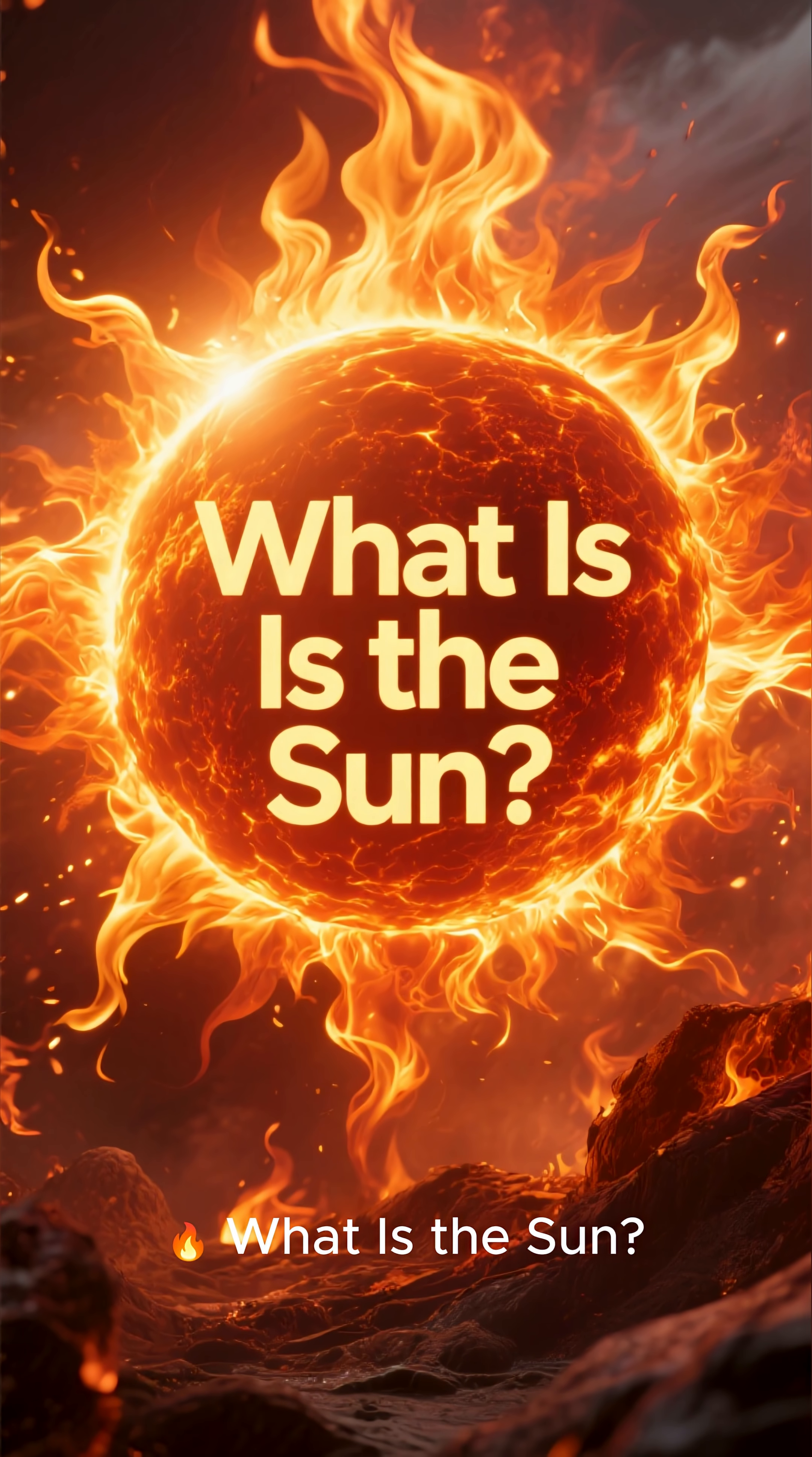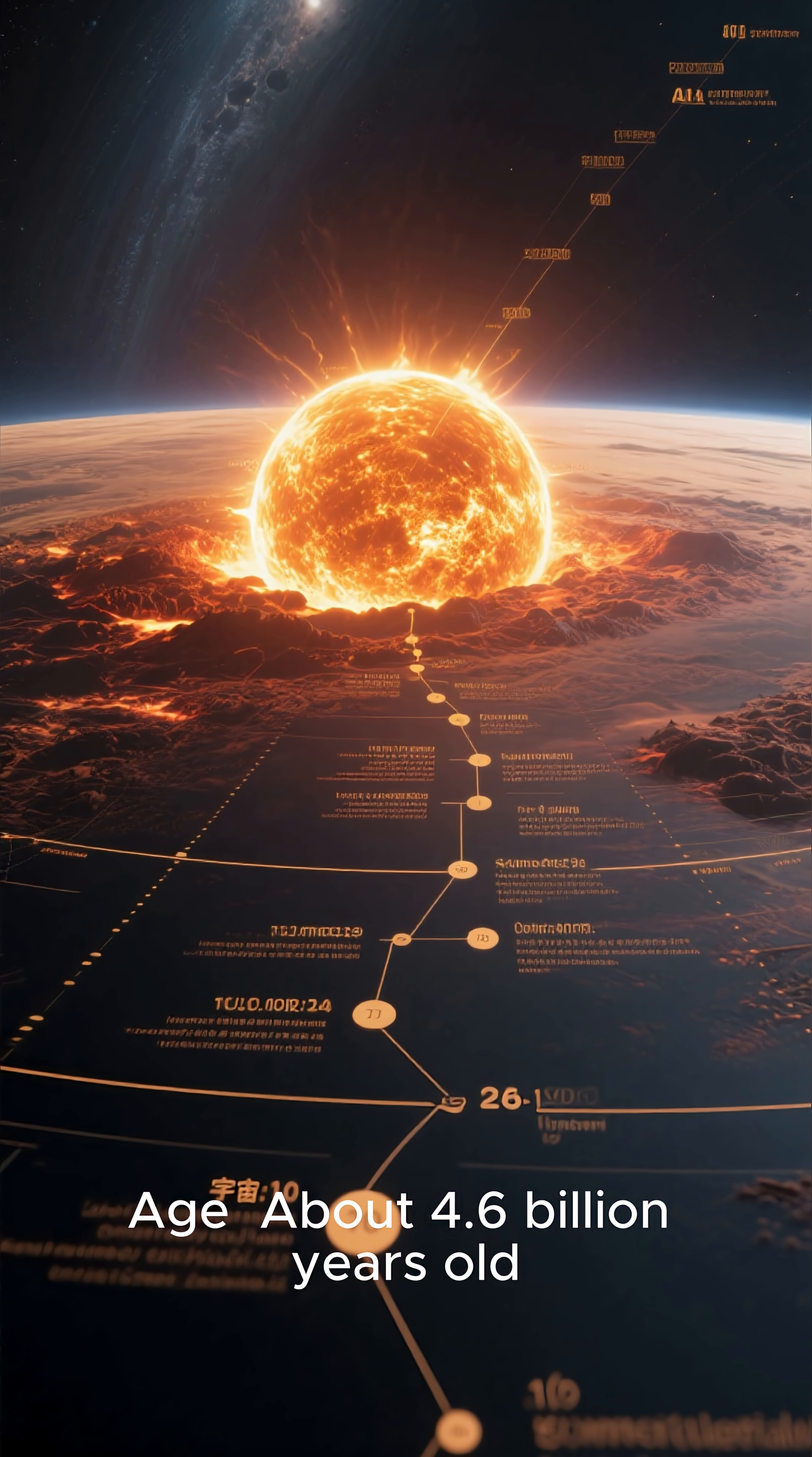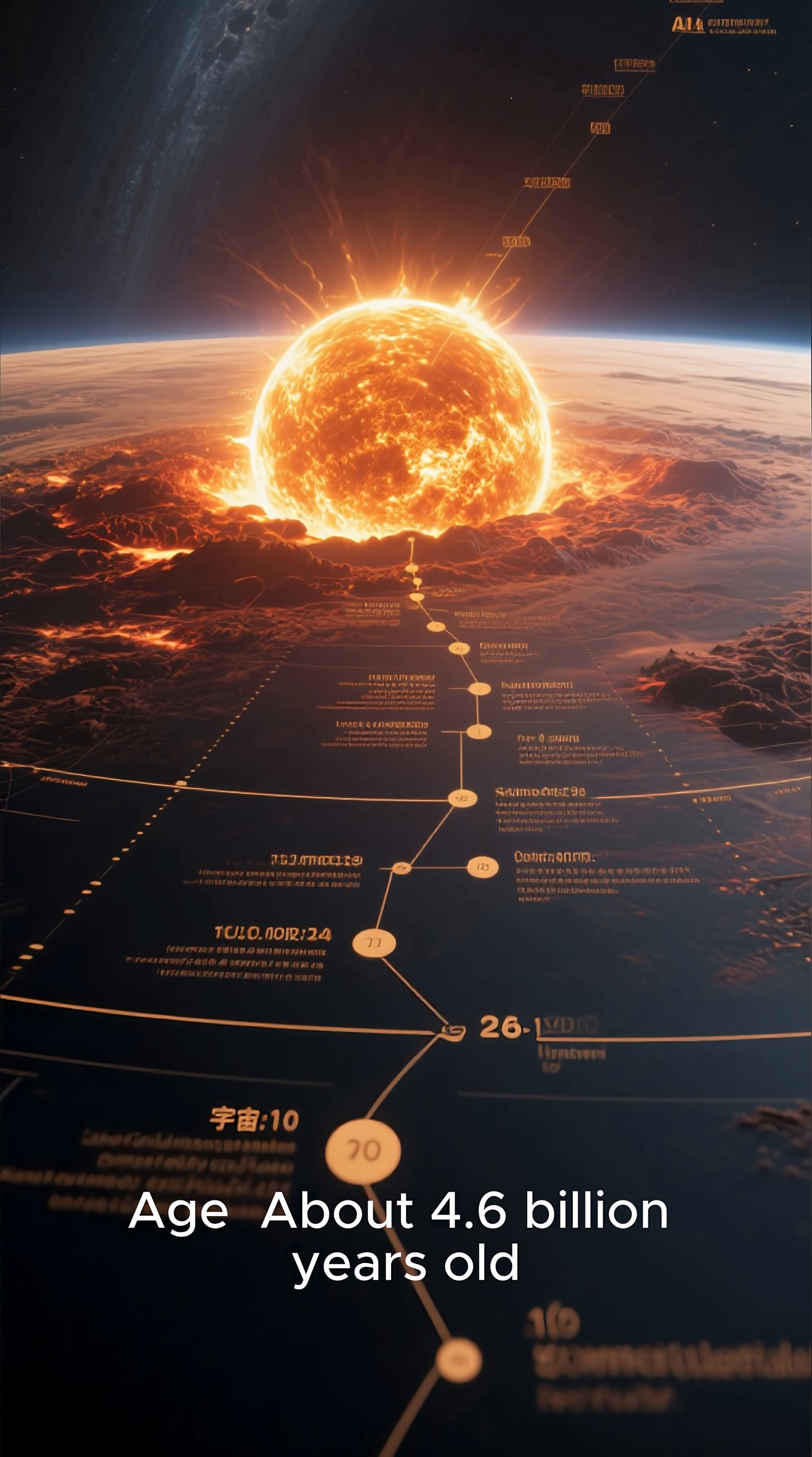What is the sun? Type: G-type main sequence star, a.k.a. a yellow dwarf. Age: about 4.6 billion years old.